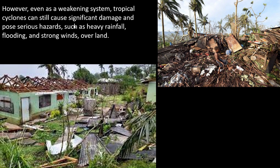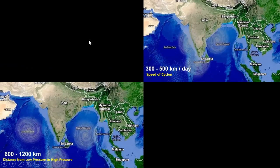The speed of cyclones, calculated from the Indian Ocean by the Bay of Bengal, is 300 to 500 kilometers per hour. The distance from the hot center — the eye point — to the outer edge of the tropical cyclone is 600 to 1200 kilometers.